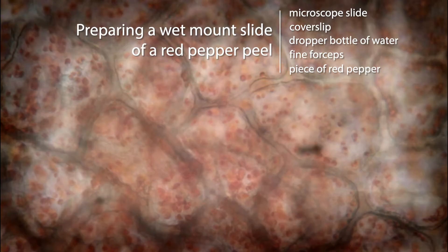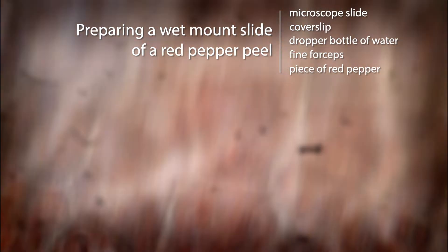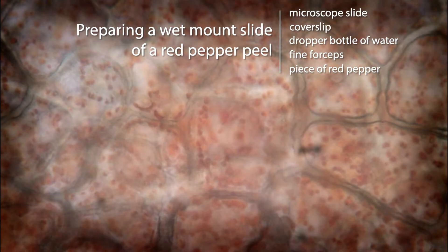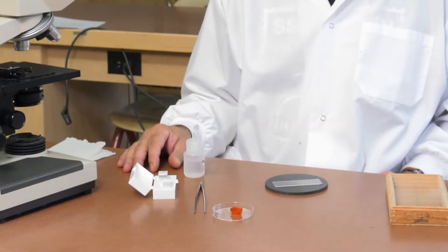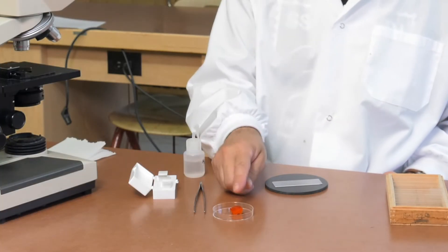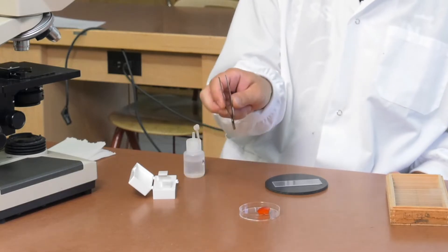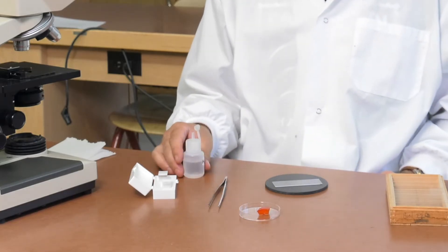Hello and welcome to the tutorial video for preparing a wet mount slide of a red pepper peel. In addition to slides and cover slips, you will need a piece of red pepper and fine forceps which will be provided at the side bench.